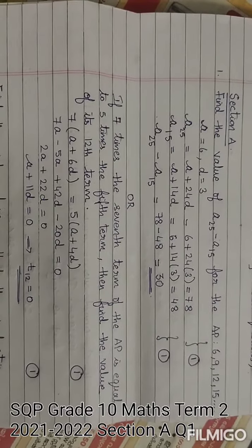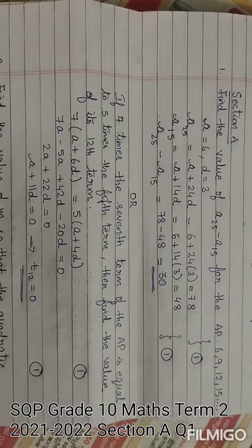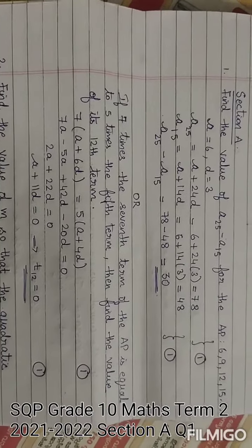Simplifying that, we will get a plus 11d equals 0. That is a plus 11d, which means that is the 12th term. So T12 equals 0.